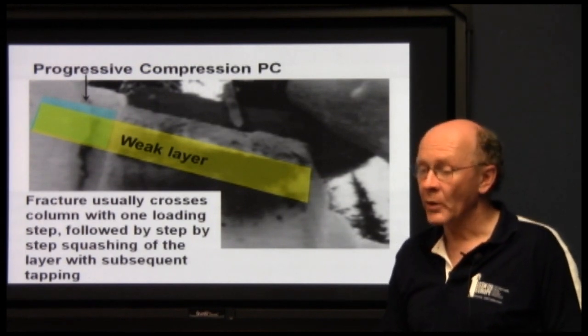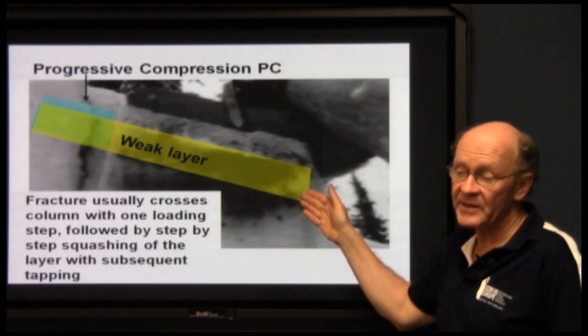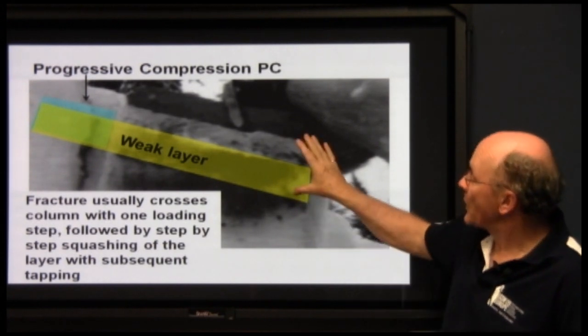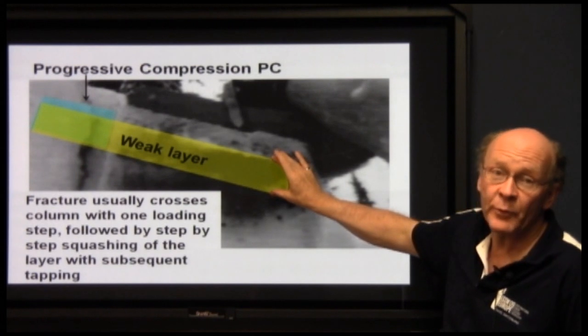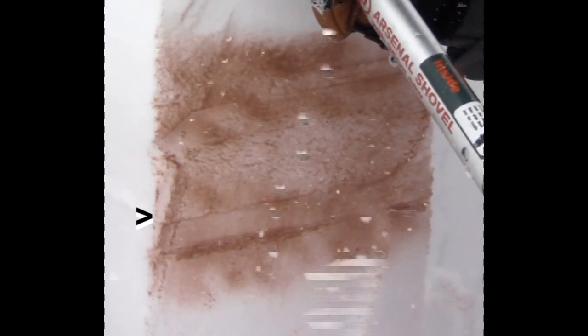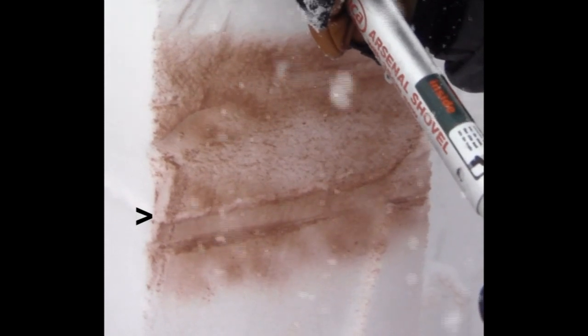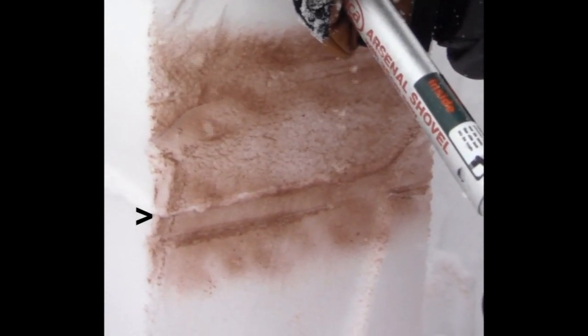For the progressive compression, or PC, kind of fracture, the fracture normally crosses the column with one tap, and then with subsequent loading steps it squashes — so we have progressive squashing or compression of a rather thick weak layer. In this slow motion clip of a progressive compression fracture, the fracture crosses the column and then we see step-by-step squashing of the thick weak layer. In another example, the arrow points to a thinner weak layer that fractures and then progressively compresses.